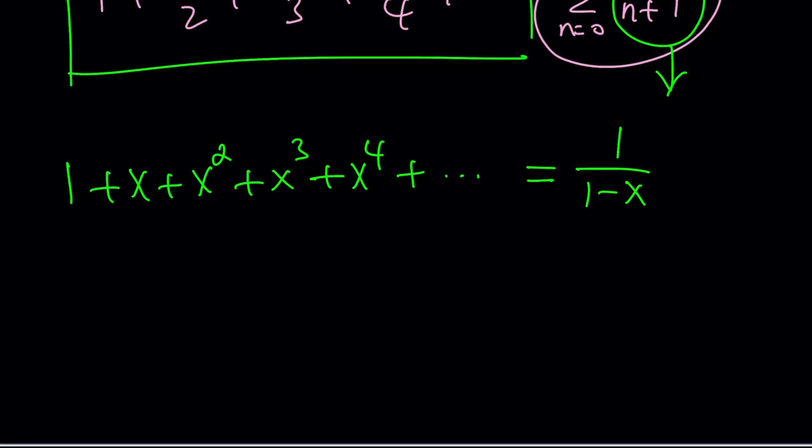This series converges if x is between negative one and one. x equals zero is okay because if x is zero, the series is one, which is convergent. Everything else besides one cancels out, so you end up with one over one minus zero. Make sense?